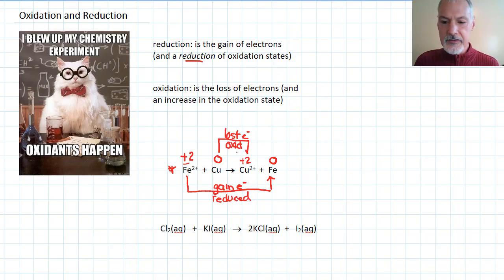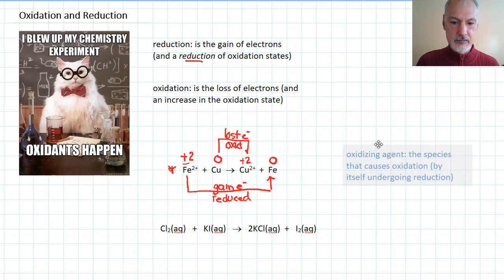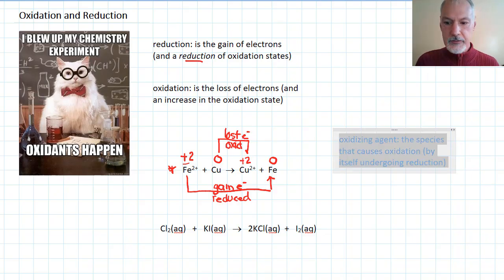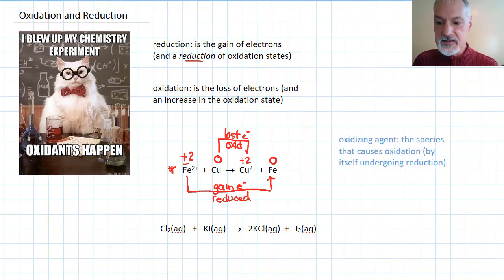Now, the species that causes oxidation is called the oxidizing agent. So, if copper has been oxidized, the species that caused that particular change must have been the iron. So, this species, I'll write it down, is my oxidizing agent. I'll define the oxidizing agent as the OA.